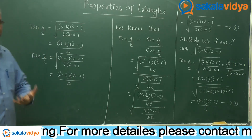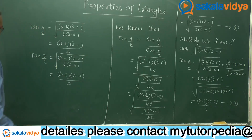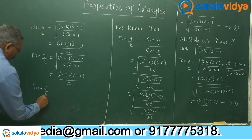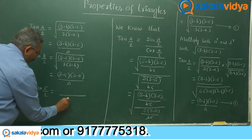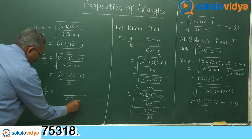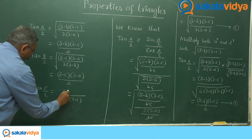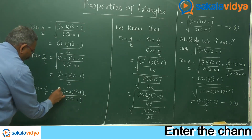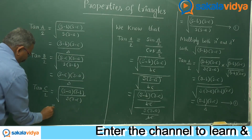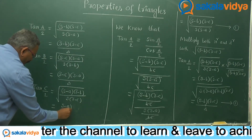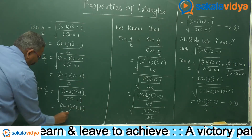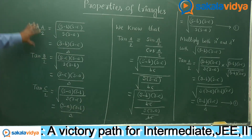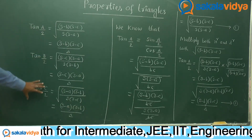Now tan(C/2). Try yourself. tan(C/2) equals √[(s−a)(s−b) / s(s−c)], which can be remembered as (s−a)(s−b) / delta. In this way, all the values of tan(A/2), tan(B/2), and tan(C/2) can be remembered.